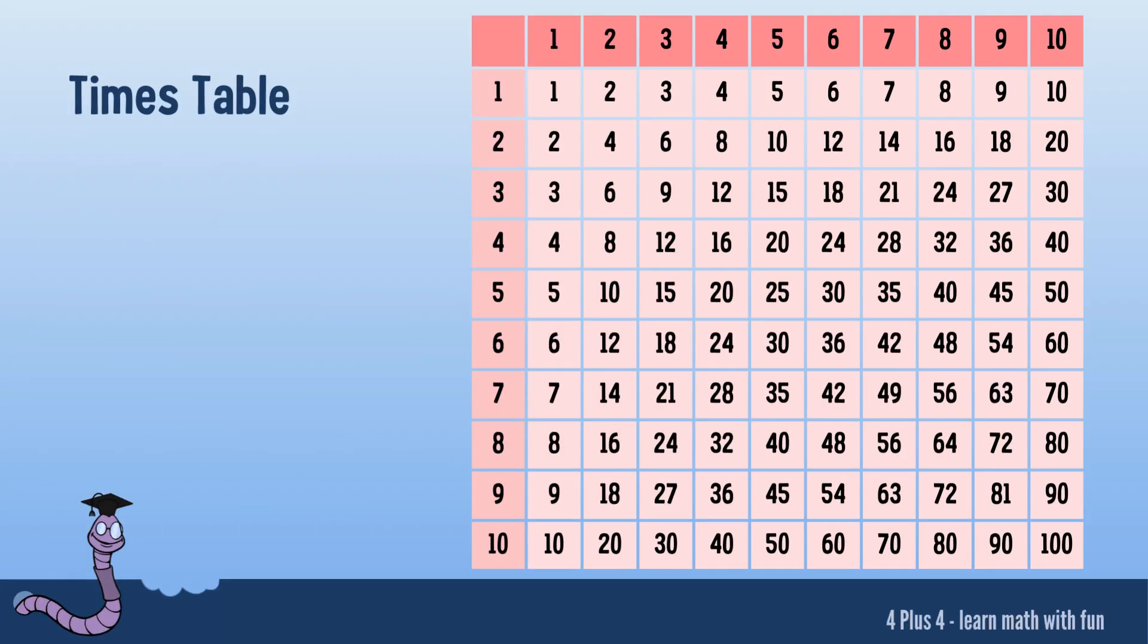An essential aspect of multiplication is learning the times tables. These are sets of numbers we use to multiply with other numbers to get a product. From 1 times 1 up to 10 times 10, these tables are the foundation for more complex multiplication problems. For example, if you want to multiply 5 by 3, you can see 15 as the result in the table.